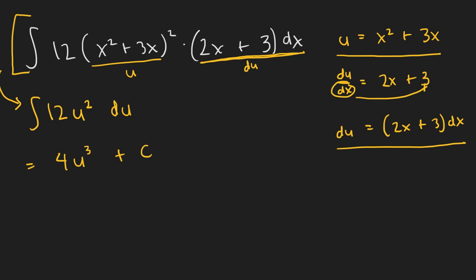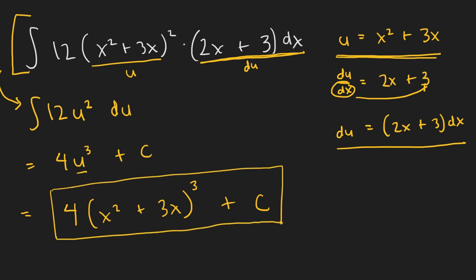Now what we do is we see this u here, and we just plug it back in. We have the u value that we determined on the right over here. So all that's left to do is just plug it in. So 4, then x squared plus 3x cubed plus C. So here is the antiderivative. And if you look back, this is actually what we started with. And this is how we can verify that our answer is correct.